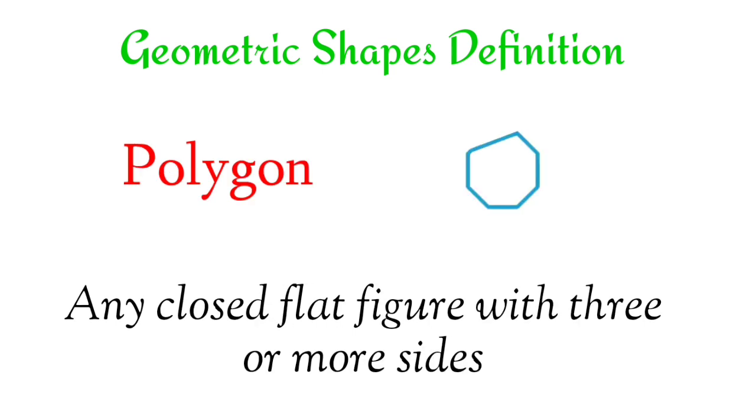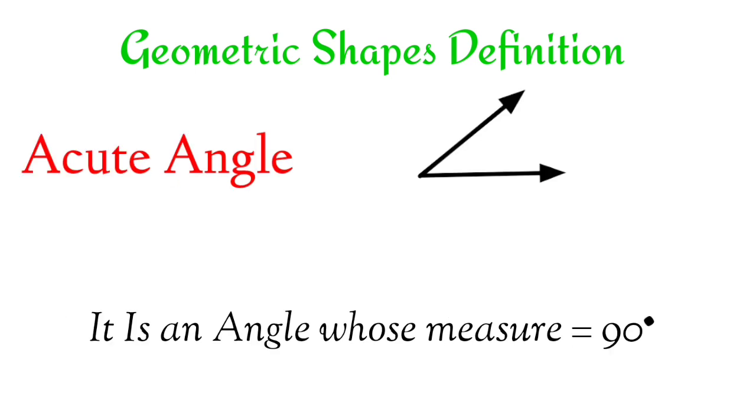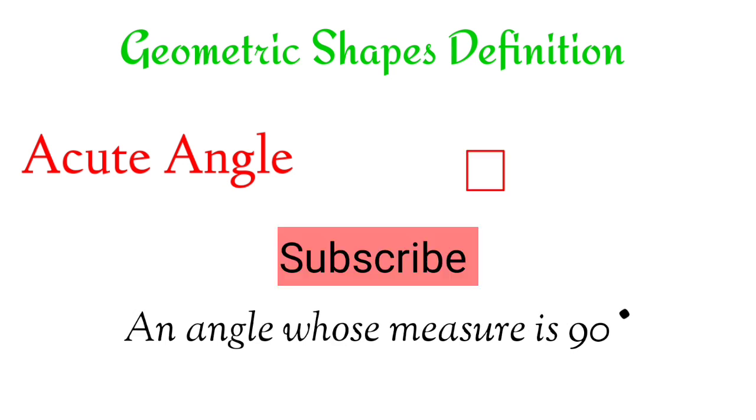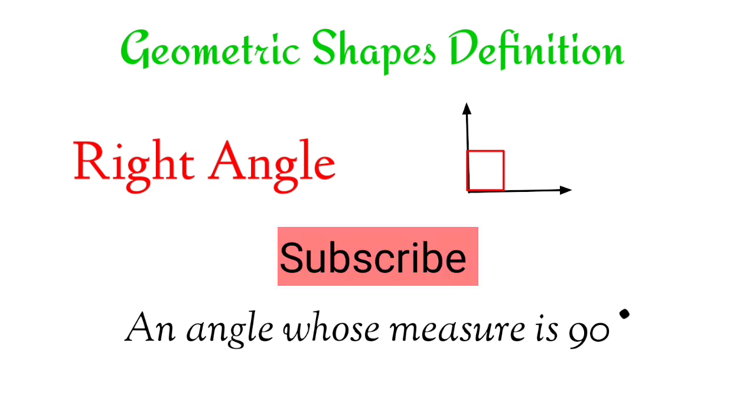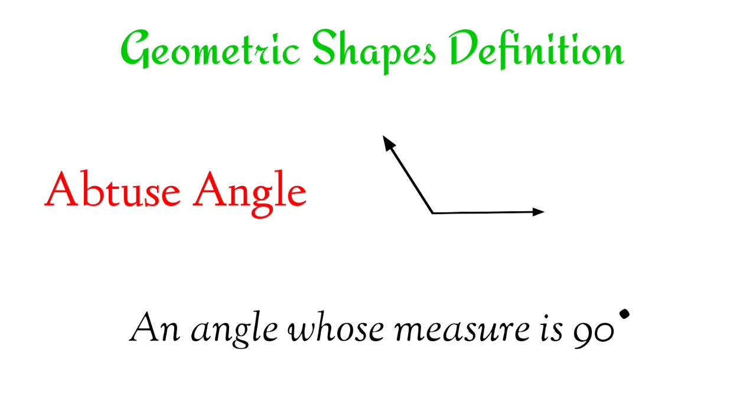Polygon. Any closed flat figure with three or more sides. Acute angle. Right angle. An angle whose measure is 90 degrees. Obtuse angle.